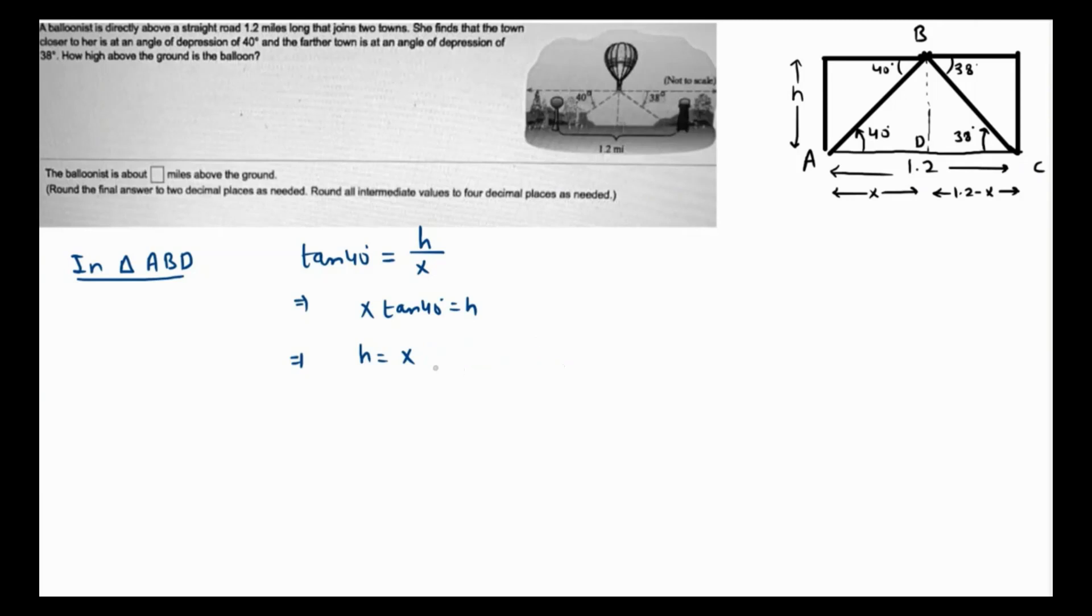It's better if we can isolate x from here because h is something which we have to find. So x will be h over tan of 40 degrees. Let's call this equation 1. Now we have another triangle. The other triangle will be CBD.